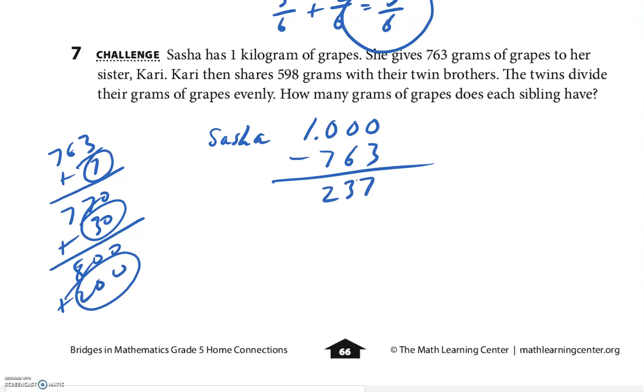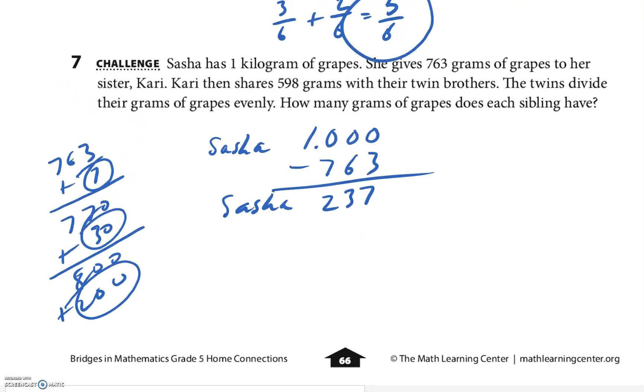Kari then shares 598 grams with her twin brothers. So Kari had 763 but she subtracted 598. I'm gonna cross out 5, borrow from it, 13 minus 8 is 5. Take away the 7, 6, 15 minus 9 is 6, 165. I think Kari has 165 grams.